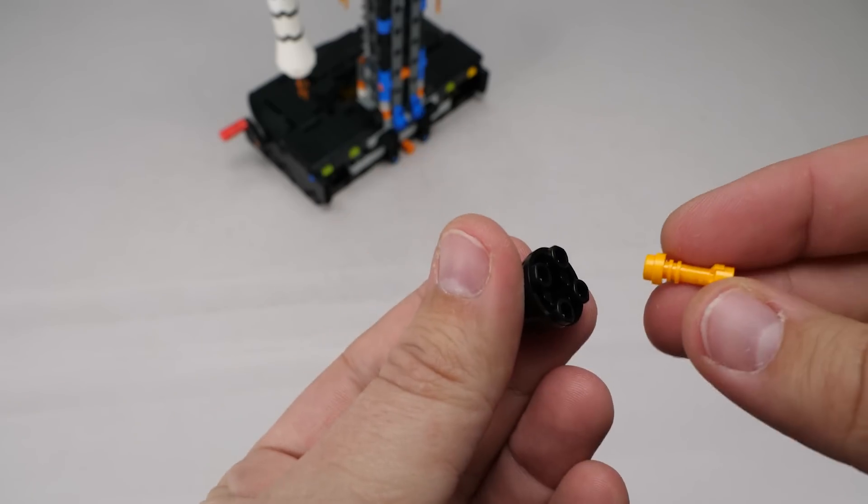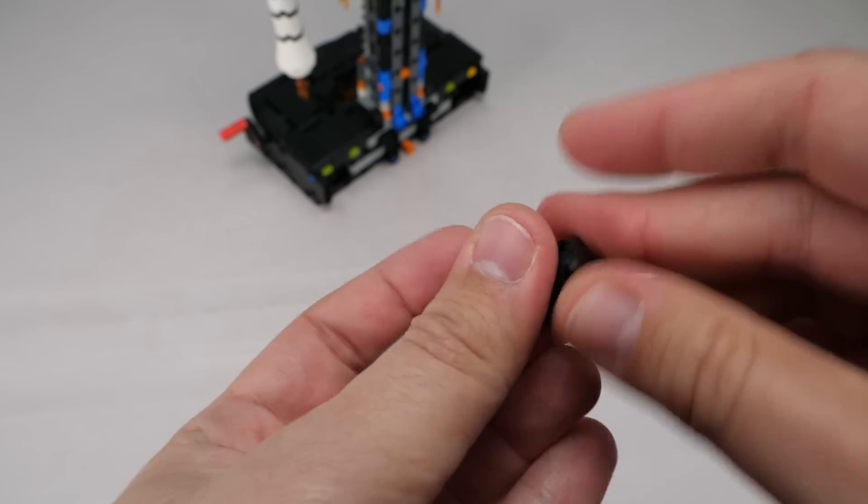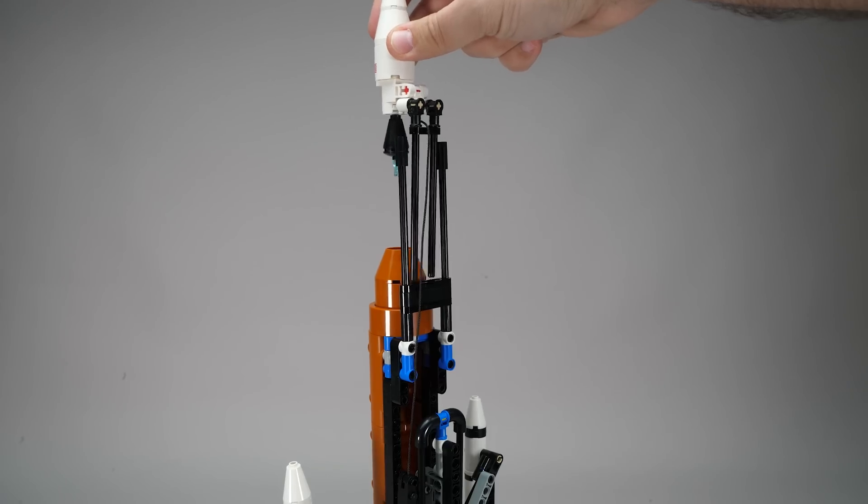There's also some clever system trickery here, a lightsaber hilt is used inside the cone to create a stud connection for the small dish. Now for the final assembly.